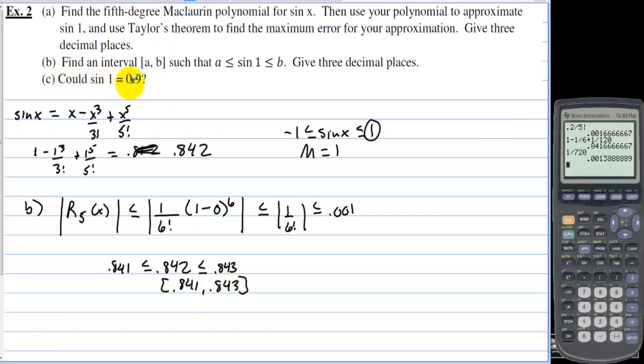Could sin(1) be 0.9? No, because 0.9 is not in the interval of the error.